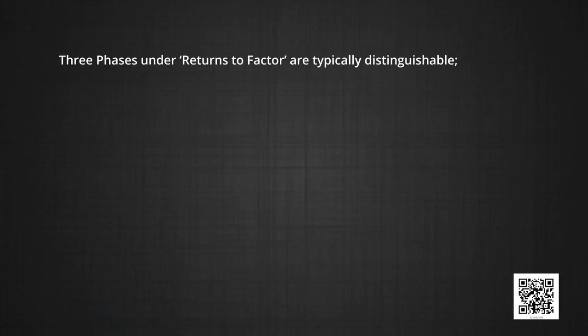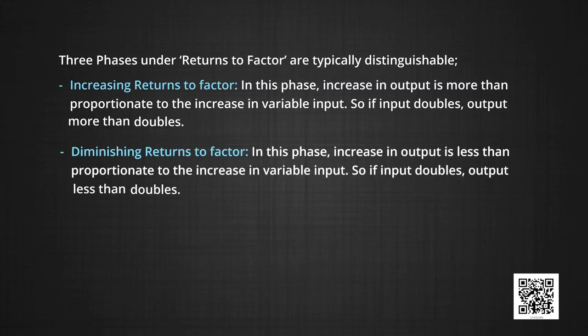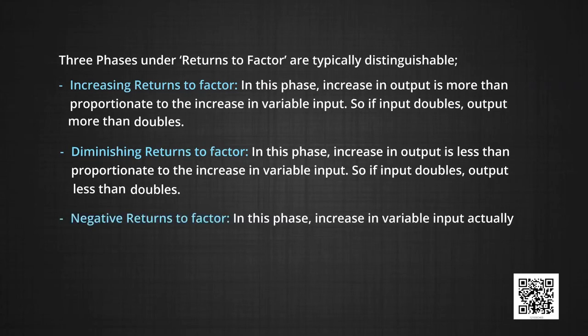How does output change when the variable factor is increased? This depends on returns to factor. Three phases under returns to factor are typically distinguishable. Increasing returns to factor exist when an increase in output is more than proportionate to the increase in input — in other words, if input doubles, output more than doubles. Diminishing returns to factor are said to exist when the increase in output is less than proportionate to the increase in input — if input doubles, output will less than double. Negative returns to factor exist when the increase in input actually causes the output to fall. We shall explain why these returns to factor exist in the next module.